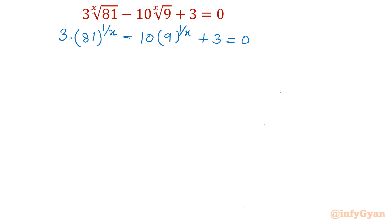Now I can write 81 as 9 square. So I will write 3 times 9 square whole power 1 over x minus 10 times 9 power 1 over x.